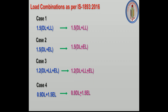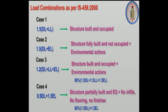In these four combinations, earthquake load and wind load will have positive and negative directions. For Case 2, you get four load combinations — positive X, negative X, positive Y, and negative Y directions. Similarly, Cases 3 and 4 also yield four combinations each. These are the reasons behind the load combination factors we consider.